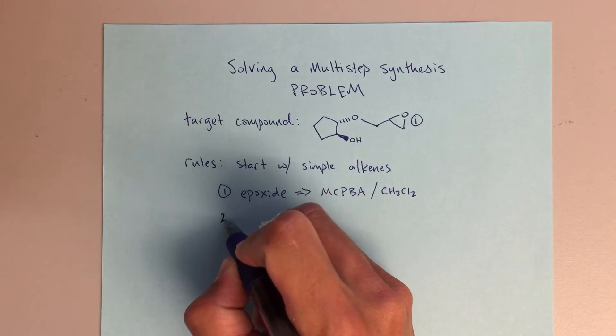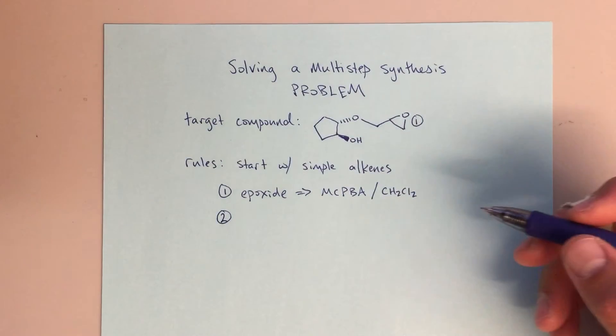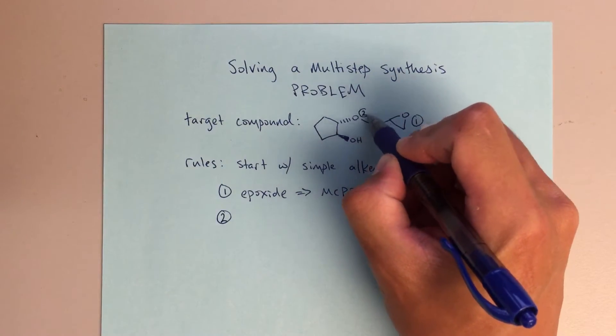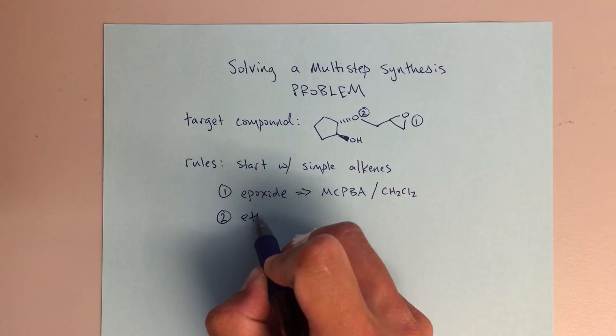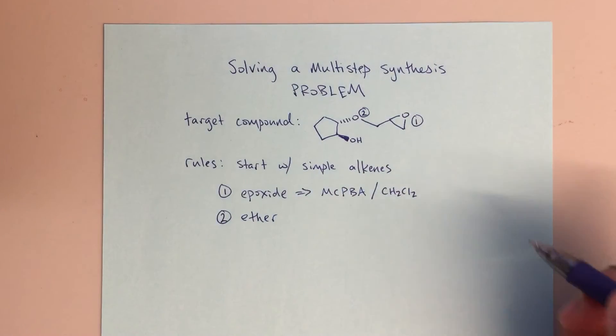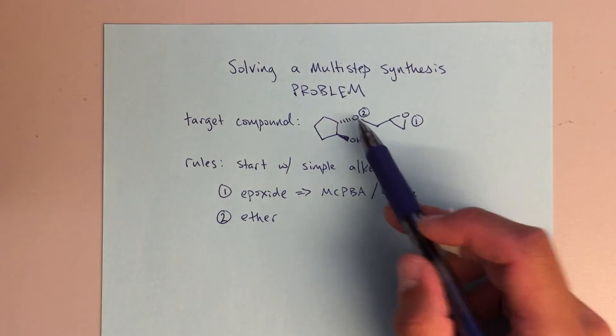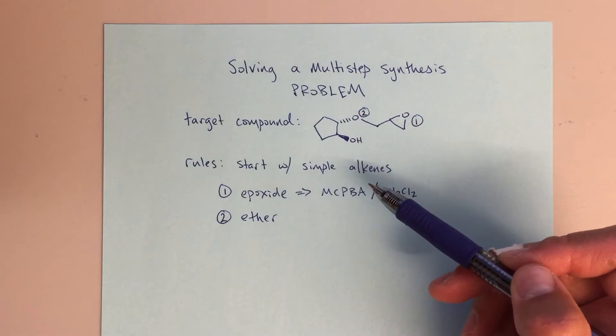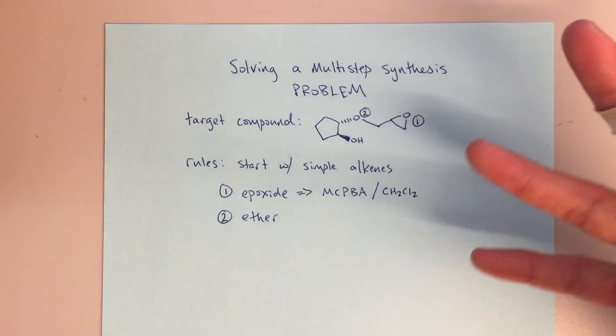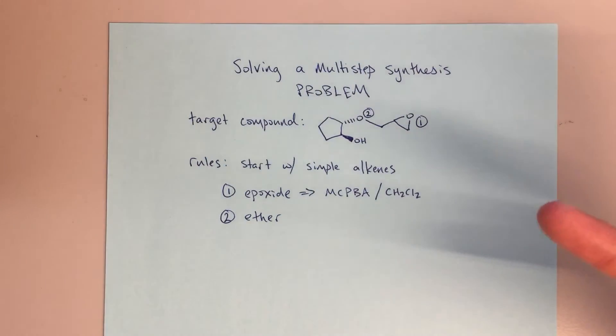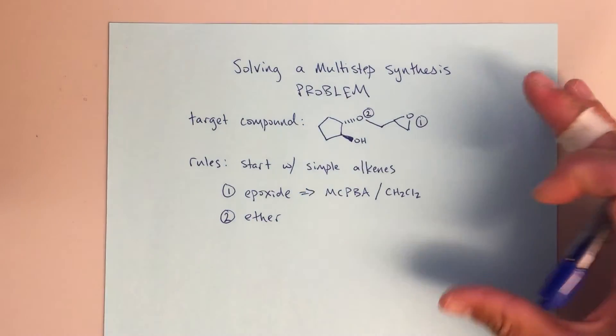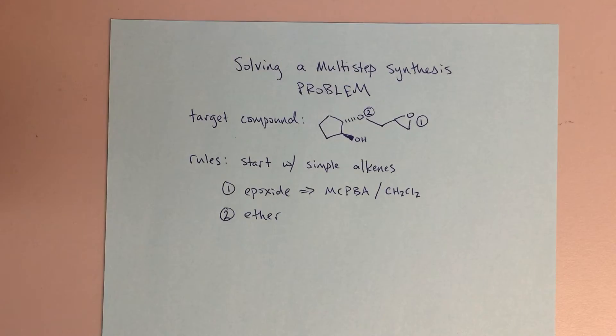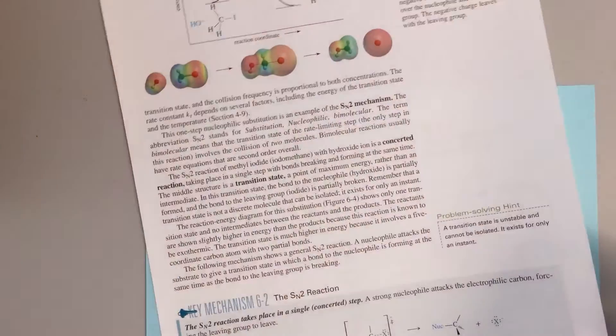Step two or note number two, I'm going to talk about this ether. It's pretty obviously an ether, we've got an oxygen, we've got two different R groups. So we need to think back, how do we know how to make ethers? Do we remember any synthesis where we form ethers?